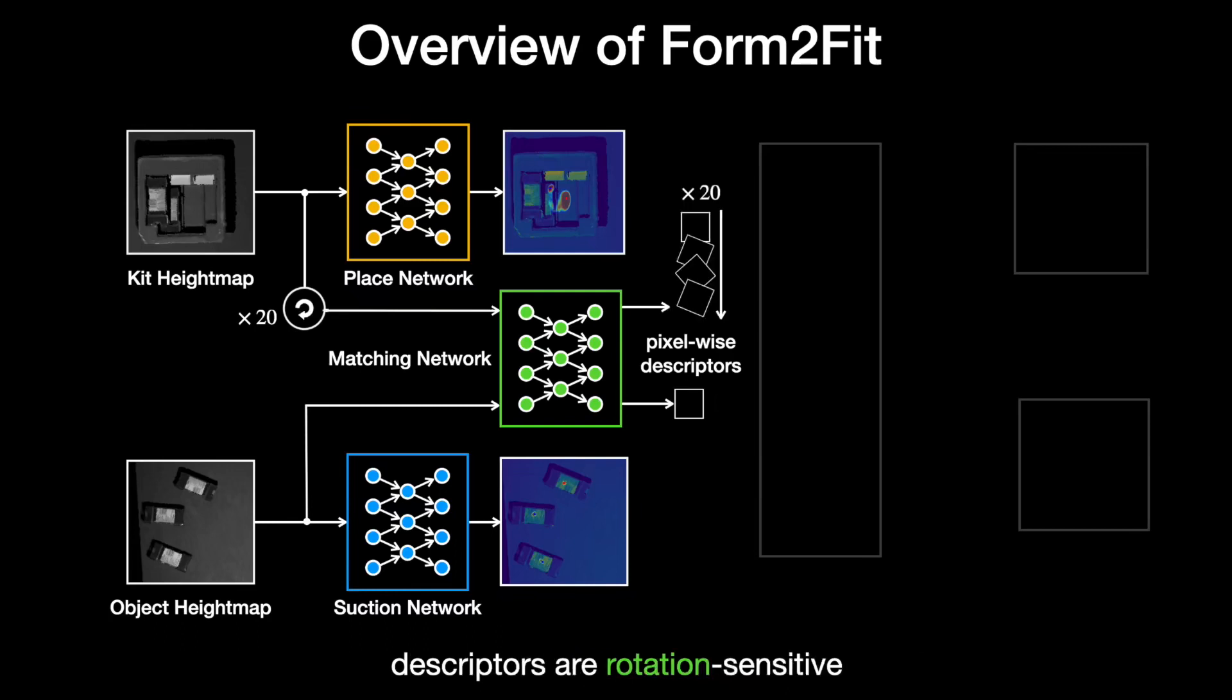In this way, the matching network is encouraged to learn rotation-sensitive descriptors, where each pixel in the kit height map maps to 20 kit descriptors, one for each rotation, but only one of them, the ground truth rotation, should match to its corresponding object descriptor.